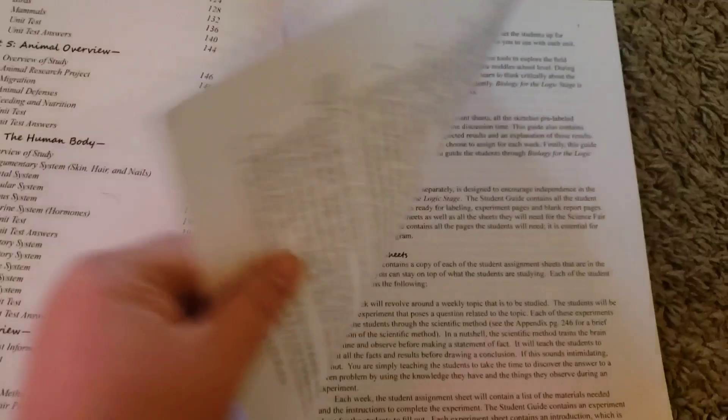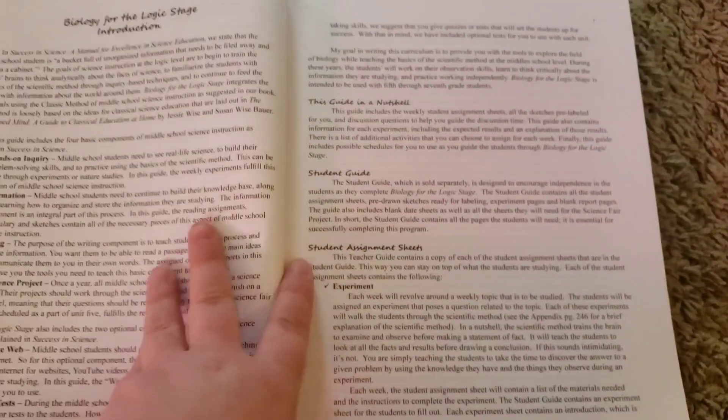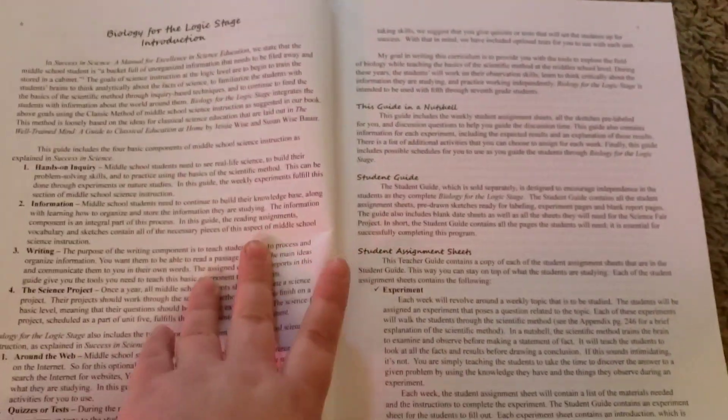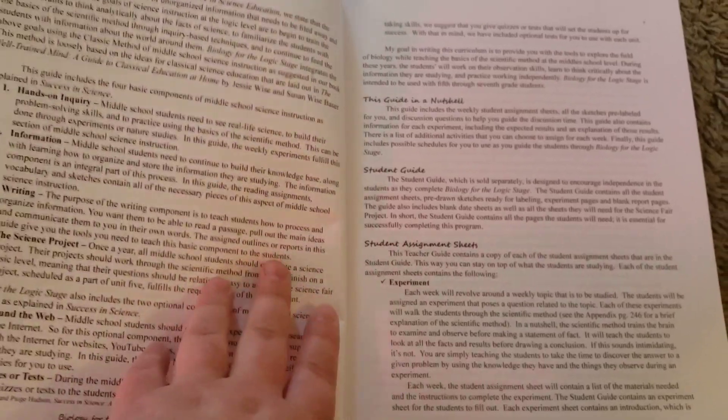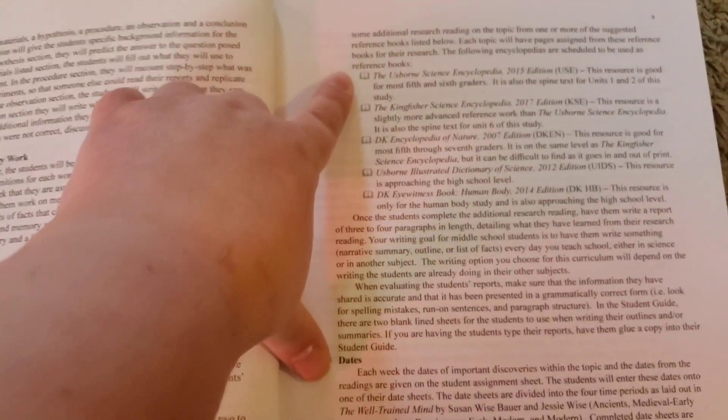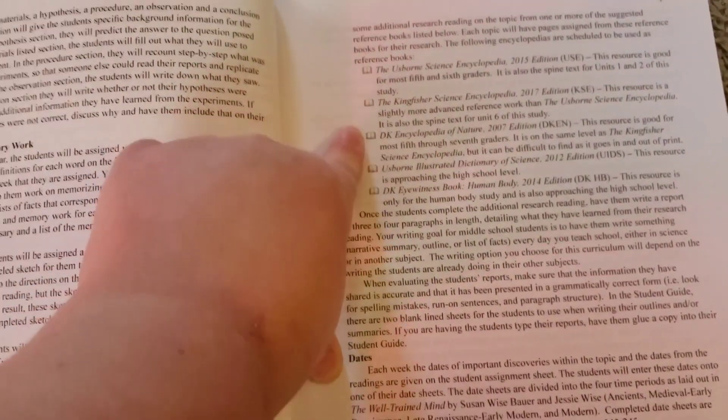So the way this works is that you use living books and encyclopedias for the information that you're going to get. So there is a book list in here somewhere, right here. It tells all the books that you need to complete the program.